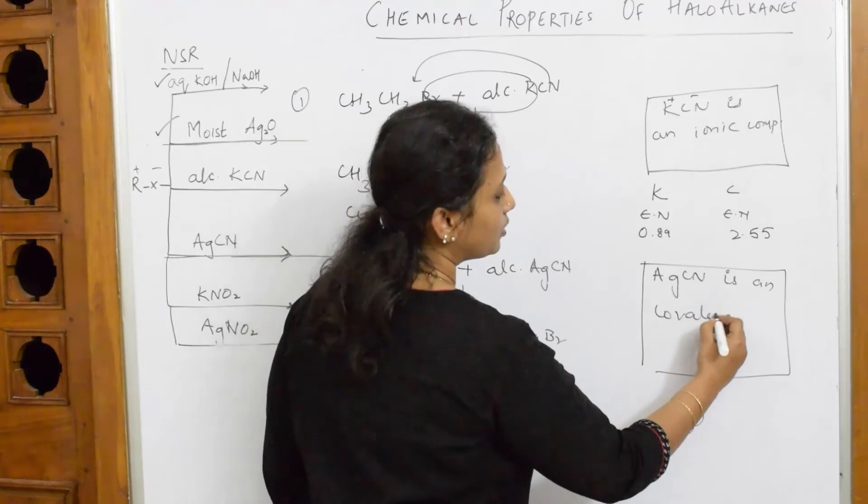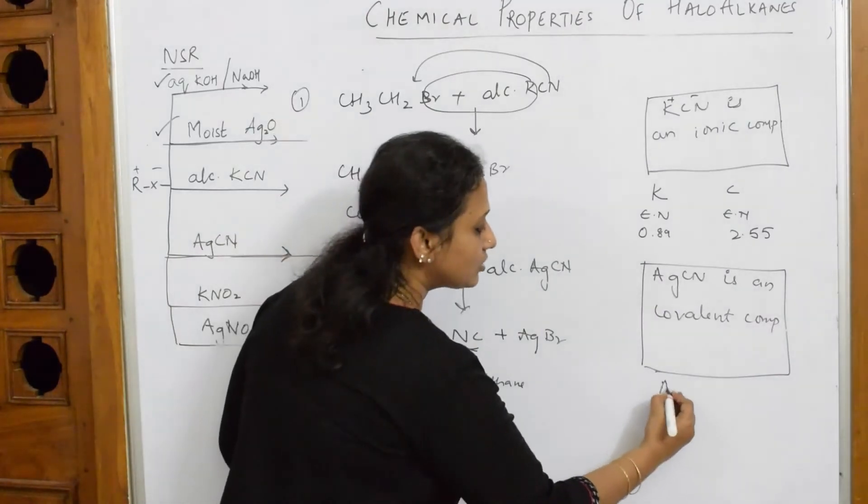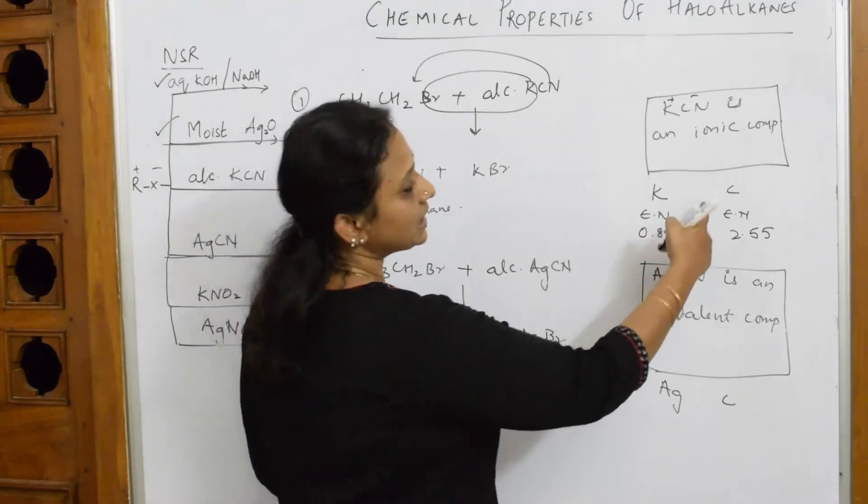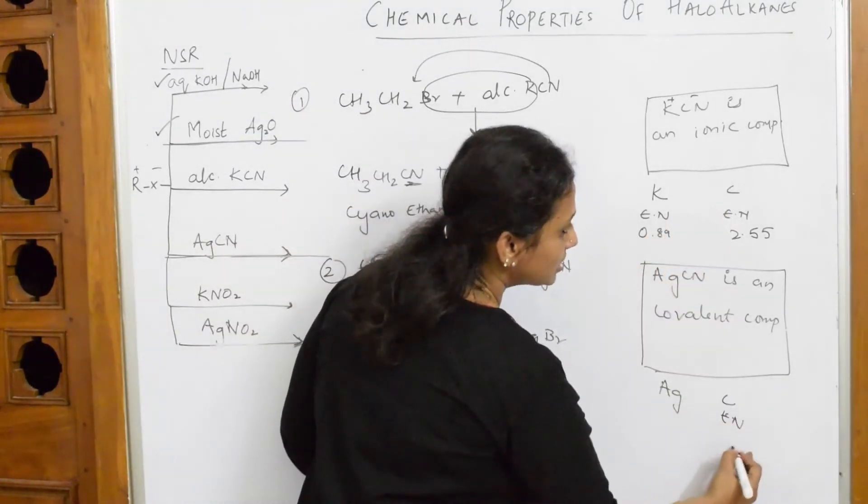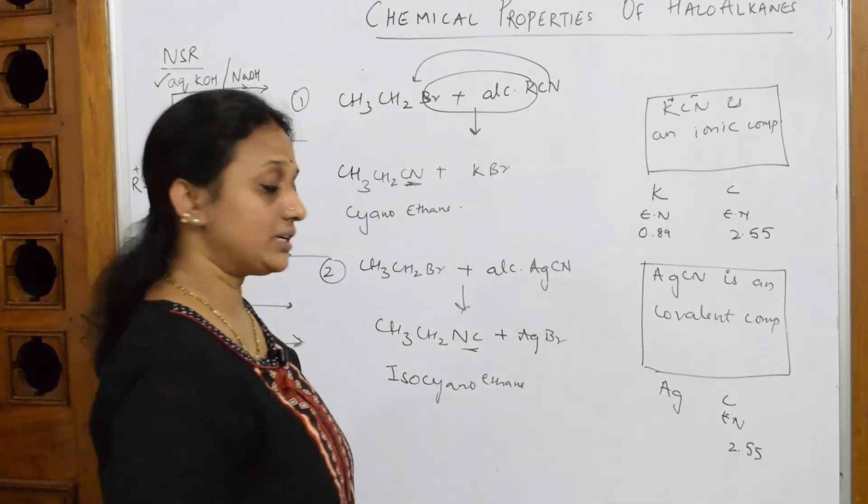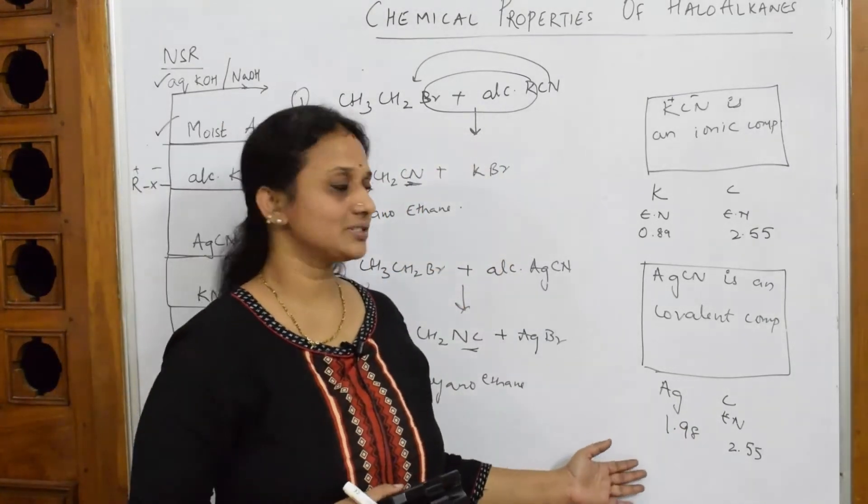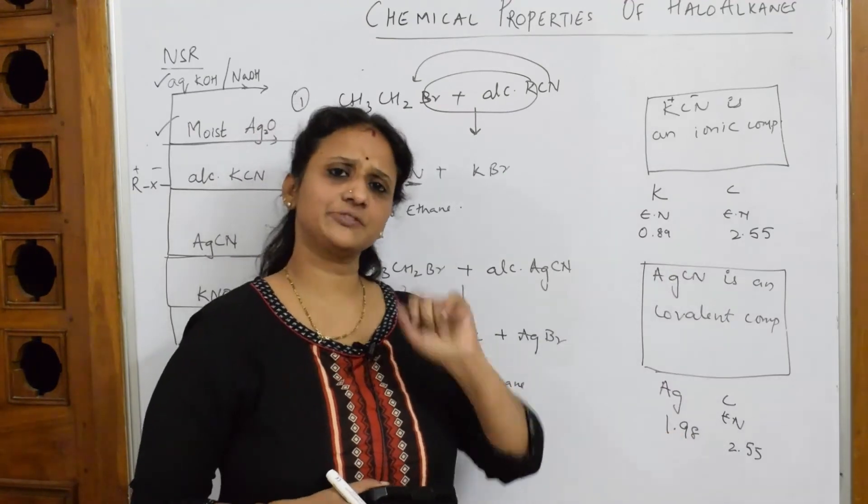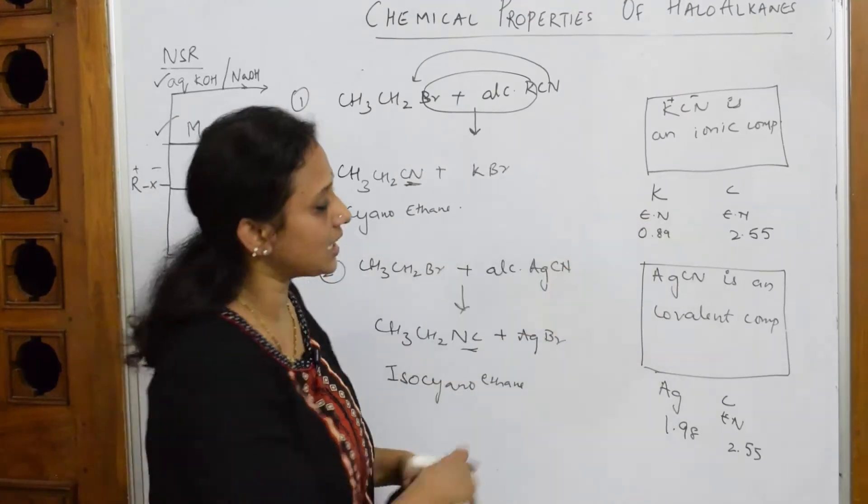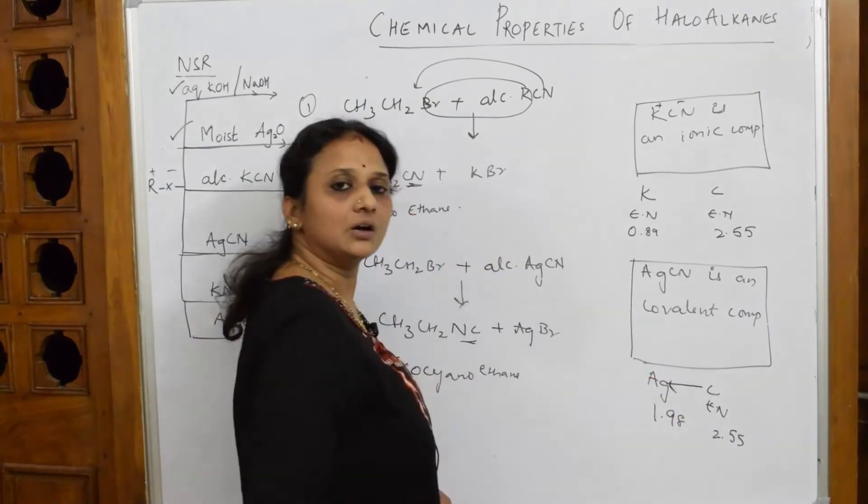Very important, it is a covalent compound. Why? Because when I see the electronegativity of Ag and the electronegativity of C, electronegativity of carbon is 2.55 on the Pauling scale. But when silver electronegativity was observed, it was almost 1.98. Are you finding any difference? There's very less difference.